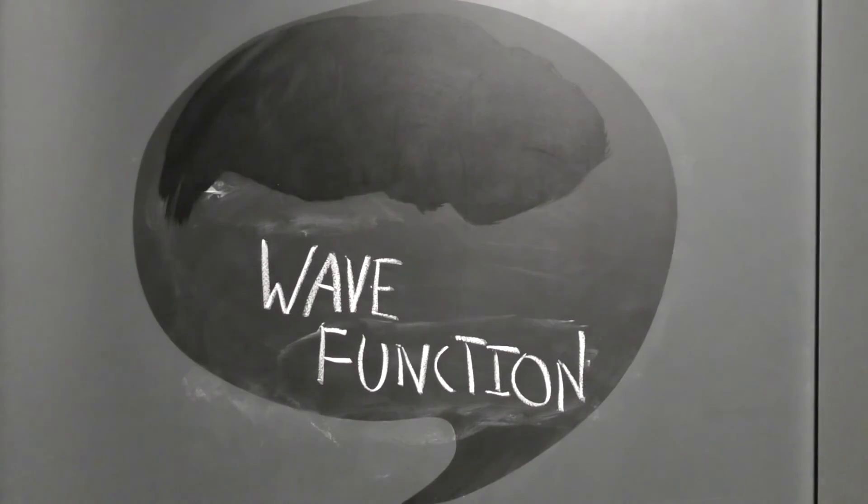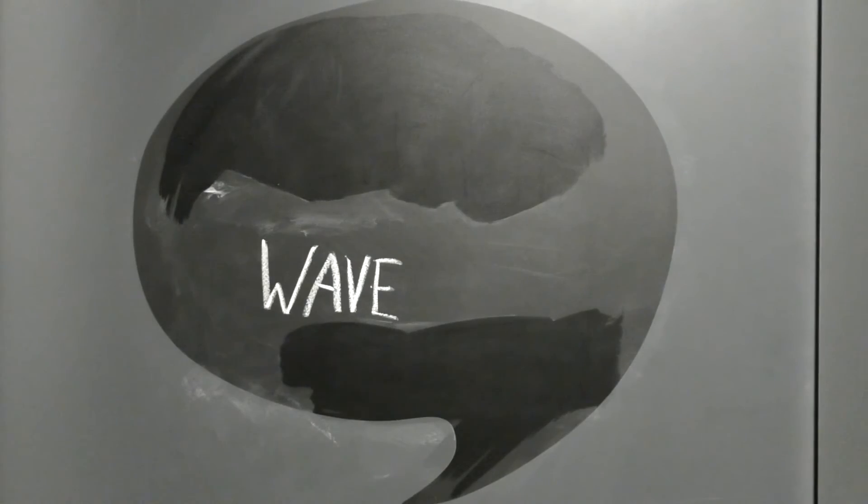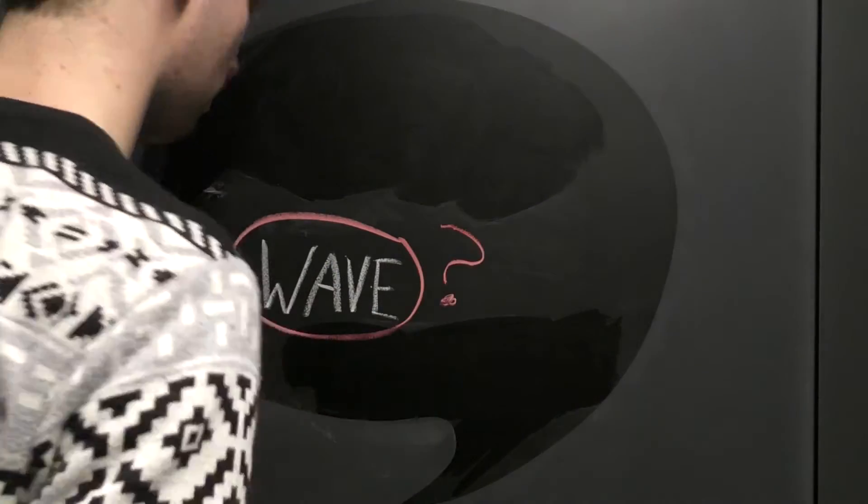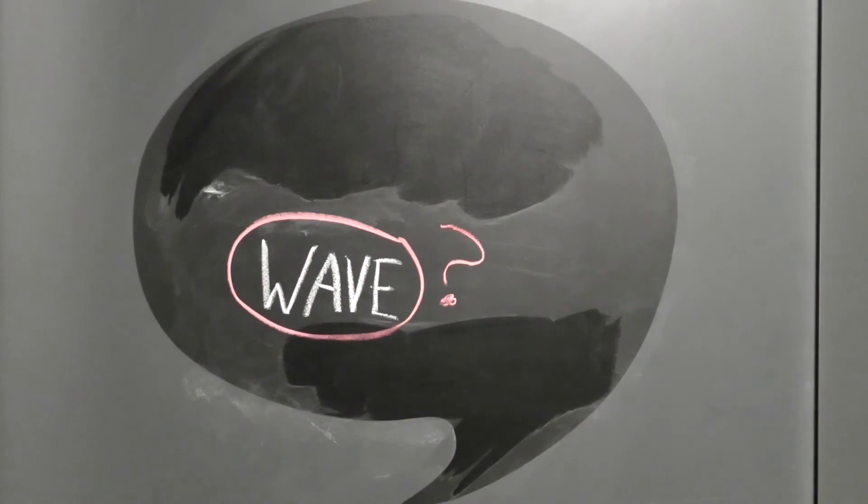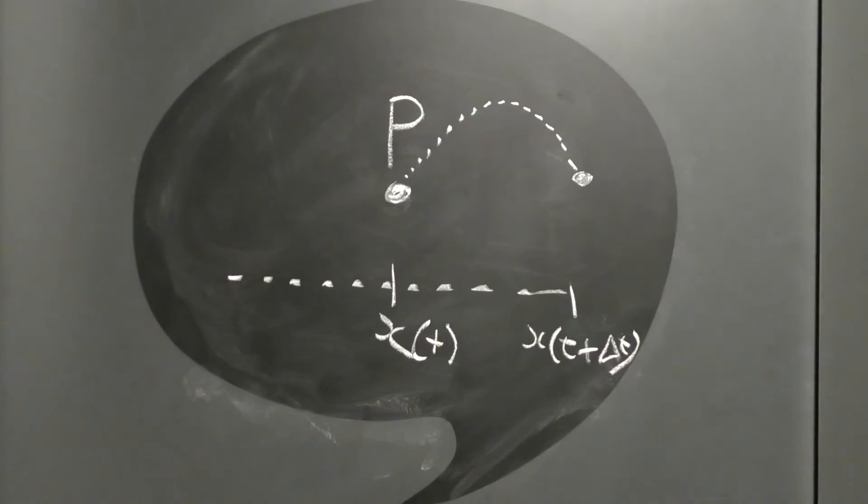But why have we been using waves to describe electrons? Particles and waves are very different things. Particles occupy a definite position in space, whereas waves are spread out in space and behave according to very different principles, such as diffraction and interference.